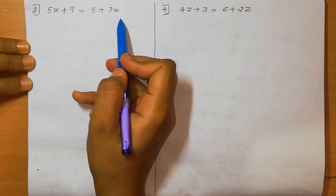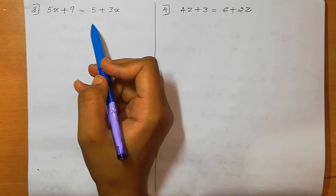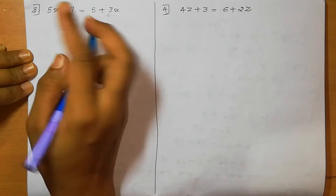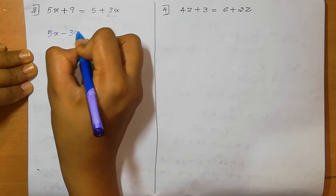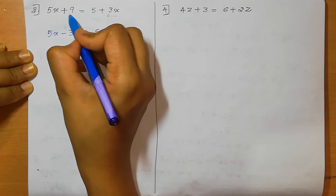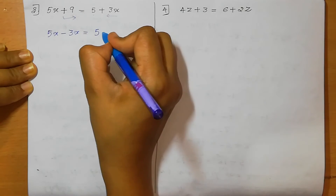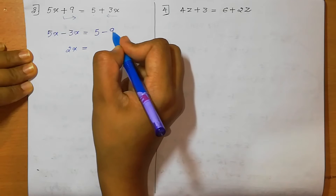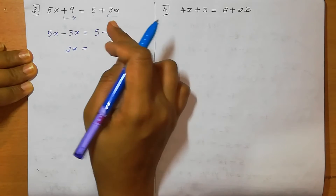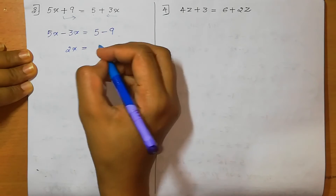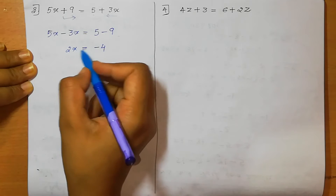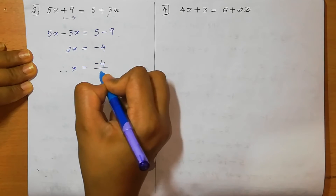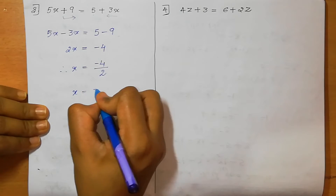Third one: 5x + 9 = 5 + 3x. We need to find the value of x. Shifting 3x to the left gives minus 3x, so 5x minus 3x = 5. Shifting plus 9 to the right gives minus 9, so 2x = 5 minus 9 = minus 4. Shifting 2 gives division: x = minus 4 ÷ 2 = minus 2.